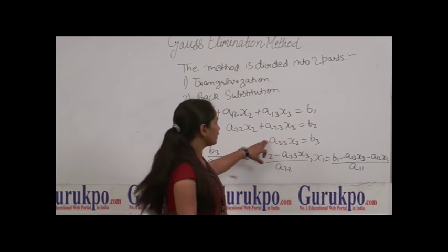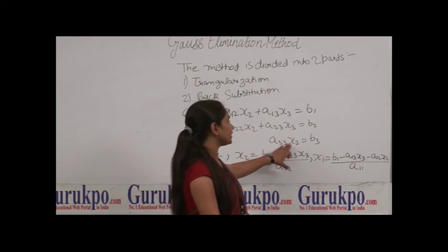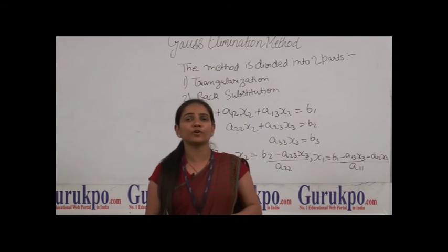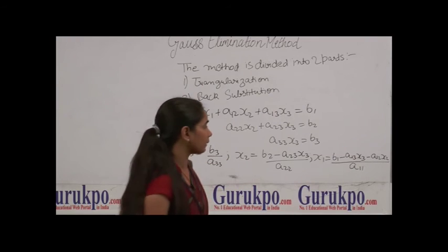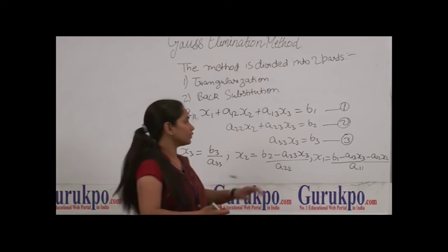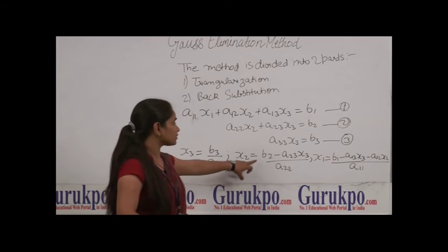As we can see, we have here A33x3 equals to B3. So it is very easy for us to find out the value of x3 from equation number 3. Now we will use the value of x3 to find out our x2.